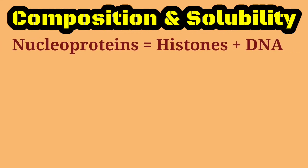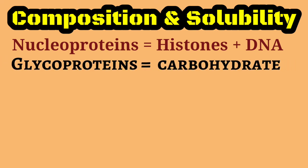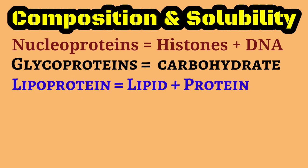Examples of conjugated proteins: nucleoproteins contain simple protein like histone bound with DNA. Glycoproteins have carbohydrate as the non-protein part — examples are immunoglobulins and mucin of saliva. Lipoproteins have lipid as the non-protein part — examples are chylomicrons, LDL, VLDL, and HDL. In lipoproteins, the protein part is called apoprotein.